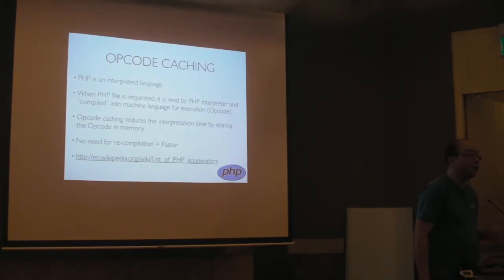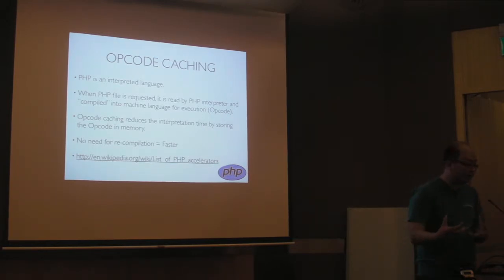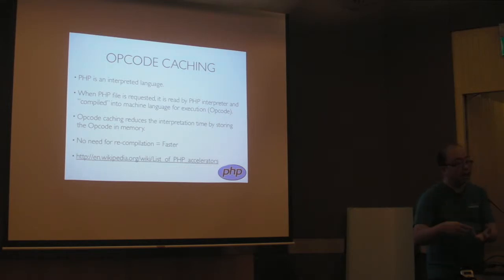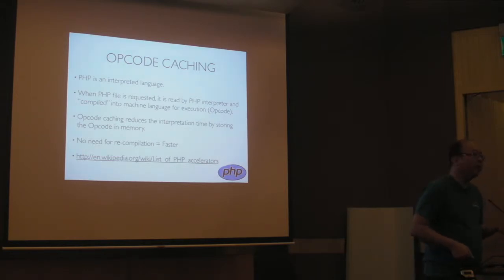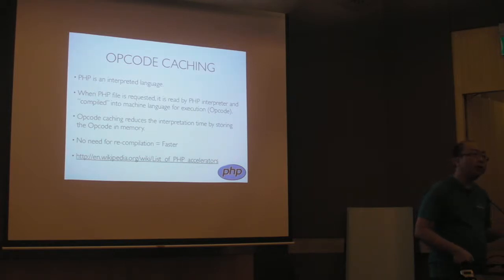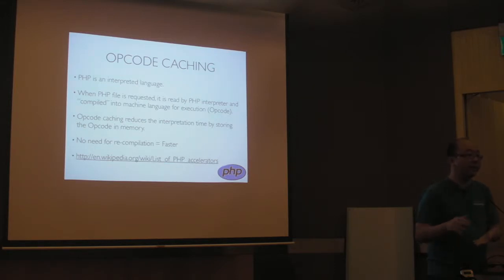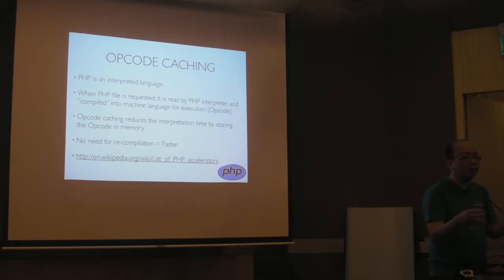Another thing you can do to make your PHP run faster is to install some form of opcode caching. PHP is an interpreted language — when PHP is requested, the interpreter compiles it into machine language called opcode. That opcode can be cached so it doesn't have to re-interpret the PHP file each time. As of PHP 5.3, there was APC built into PHP. From PHP 5.5 onwards they switched to opcache — previously called Zend Optimizer, rebranded as opcache and now the de facto standard. There are also other types of accelerators that make PHP run a bit faster.